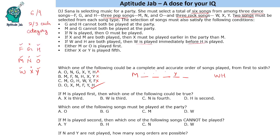Checking the answer options: x is third — x is not played, eliminated. W is third — possible, w and h could occupy positions three and four. N is fourth — n is not played, eliminated. H is second — h cannot be second because w must immediately precede h and w cannot be first since m is first. So the answer is 'w is third,' which could be true.